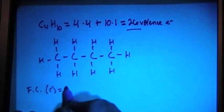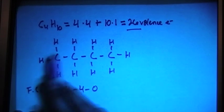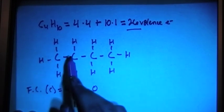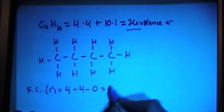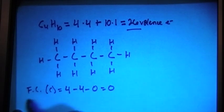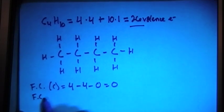So carbon brings in four valence electrons minus four bonds minus zero non-bonding electrons, because they're all just bonds, there's no single electrons, which gives you a formal charge of zero for each carbon.